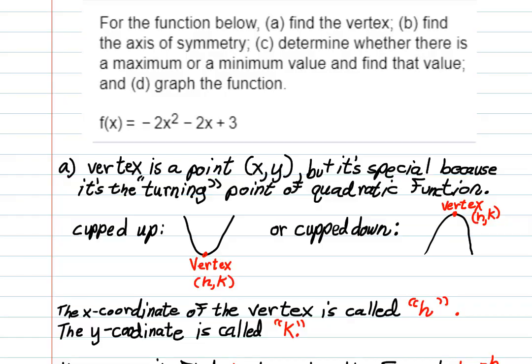Okay, here we're going to be graphing a quadratic function, but before we do that we're going to find the vertex, find the axis of symmetry, determine whether there's a maximum or minimum value and find that value, and then graph the function. Our function is f(x) equals negative 2x squared minus 2x plus 3.